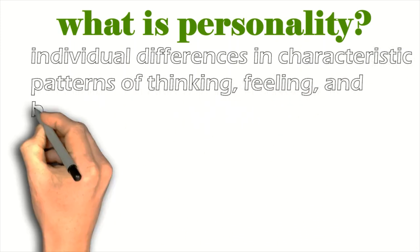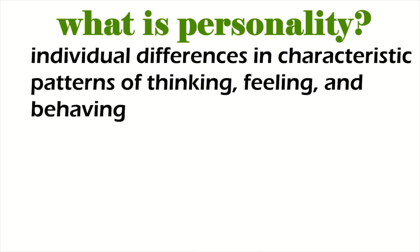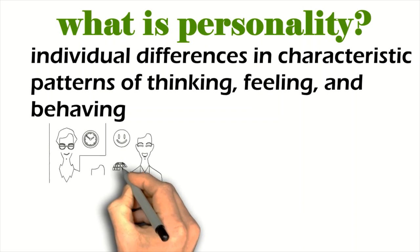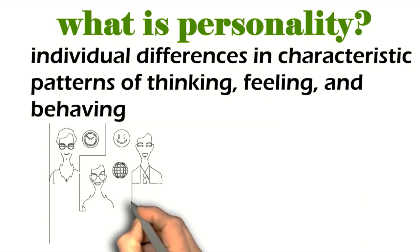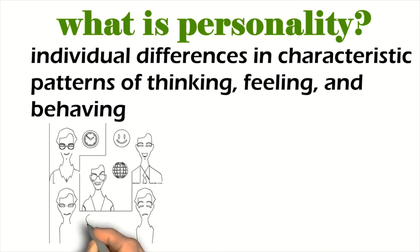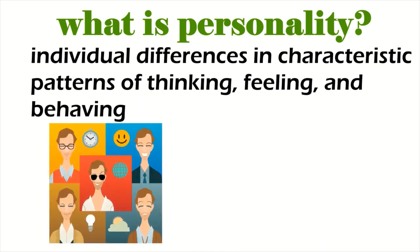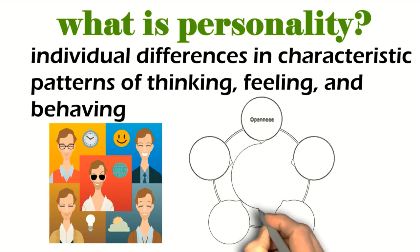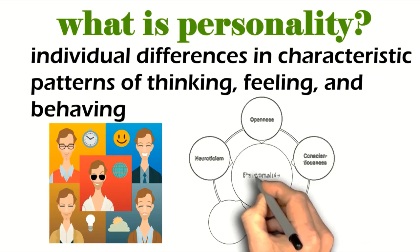According to the American Psychological Association, personality is defined as individual differences in characteristic patterns of thinking, feeling and behaving. Scientists have created a lot of personality traits, but the most acceptable model is the big five, which we know in the name of the ocean model.